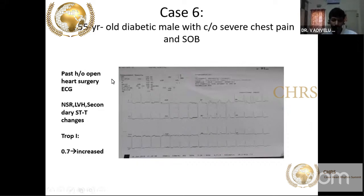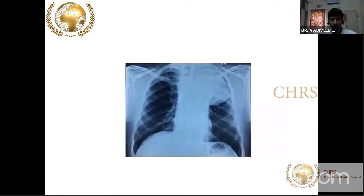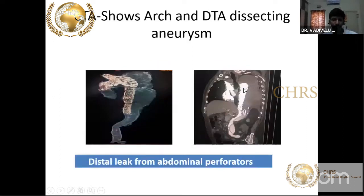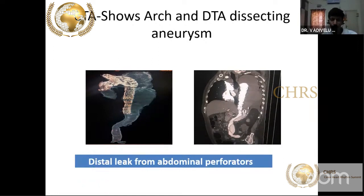A patient with past history of open-heart surgery showing LVH with strain pattern and ST segment depression in lateral leads, elevated troponin, and breathlessness. Chest X-ray showed superior mediastinal widening and a stent graft. This patient had undergone ascending aorta to distal thoracic aorta graft repair but developed a leaking aortic aneurysm — an impending rupture. Giving antiplatelet therapy here would facilitate rupture and do more harm than good.